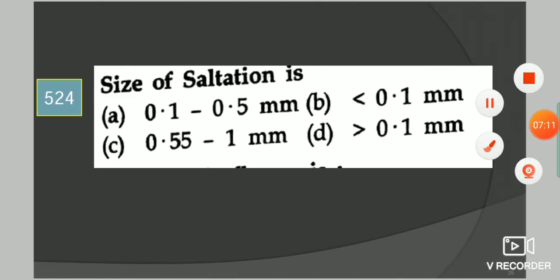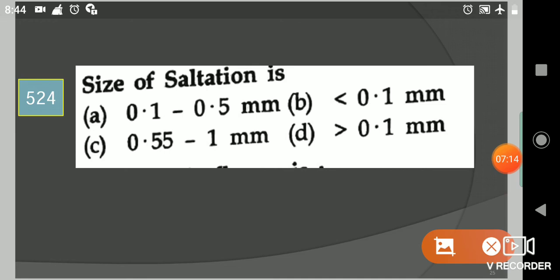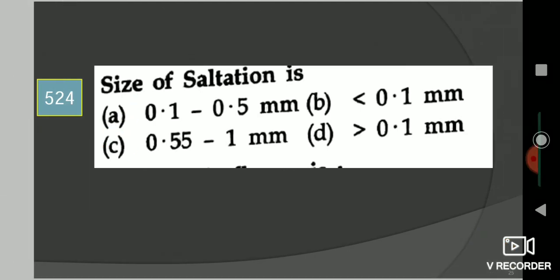Next question: Size of saltation is? Your options are 0.1 to 0.5 mm, less than 0.1 mm, 0.55 to 1 mm, greater than 0.1 mm. Your answer is option A, 0.1 to 0.5 mm.